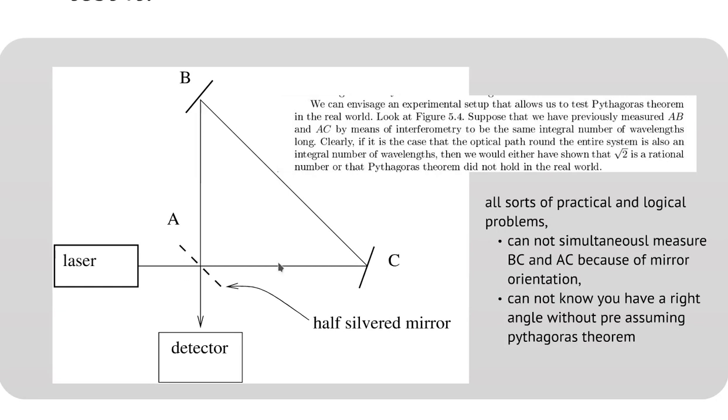And this is a hypothetical set-up with half-silvered mirrors to verify Pythagoras' theorem. Suppose you knew that AC and AB had been previously measured to be an integral number of wavelengths of light. Now, if one was able to show that the complete path ACBA again was also an integral number of wavelengths of light, one would have therefore disproven Pythagoras' theorem. But there's all sorts of practical problems to this. You can't simultaneously measure BC and AC because of mirror orientation. And you can't know whether you've actually set up a right angle without pre-assuming Pythagoras' theorem, because the practical techniques you use to set up right angles assume it.